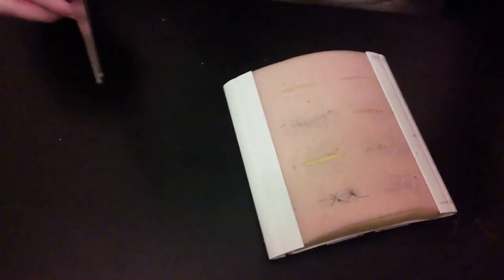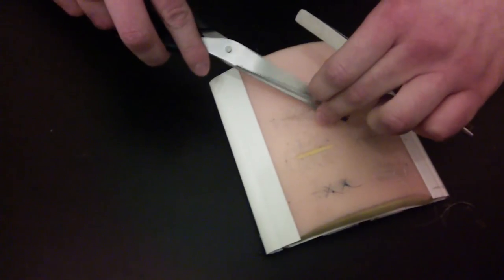We're going to take the scissors and cut it so there's about a centimeter left. And that is how you do a Lambert inverting suture.